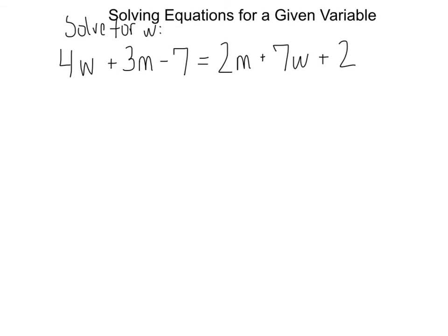This will be our last example today. Let's solve for w. Now before we can really do anything, we want to make sure we get w by itself. So I see a 4w over here and I see a 7w over here. I could subtract 7w from both sides or I could subtract 4w from both sides. If my goal is to get w positive and by itself on one side of the equation, then what would make the most sense here first would be to take 4w away from both sides. Because we're eliminating it from the left and then on the right I'll be left with a positive 3w. So I've got 3m minus 7 equals 2m. Now I've got plus 3w plus 2.